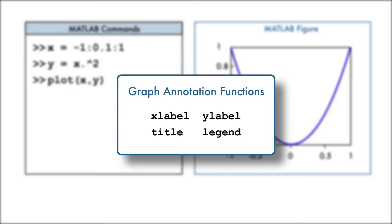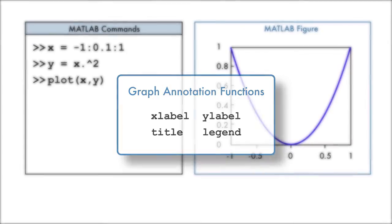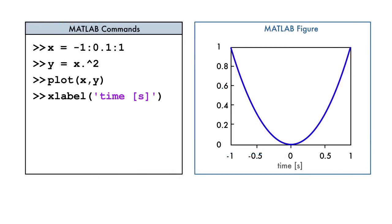We can add a label to the x-axis with the x-label function. Notice that we pass the label enclosed in single quotation marks as input to the x-label function.